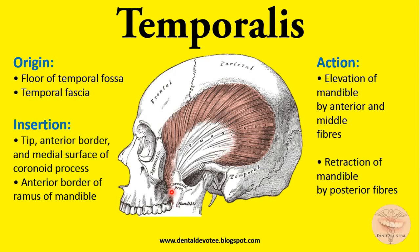Now there is a trick to remember the action of the muscles of mastication. You just have to think about what movement will occur when the muscle contracts or shortens. By the anterior and middle fibers — these are the anterior fibers, these are the middle fibers, and these are the posterior fibers of the temporalis muscle.